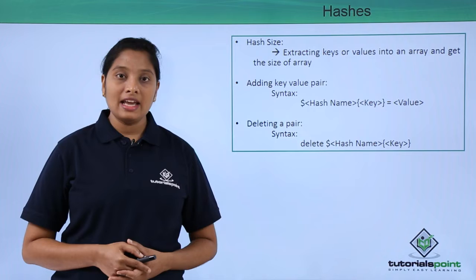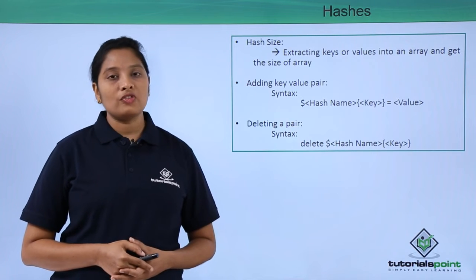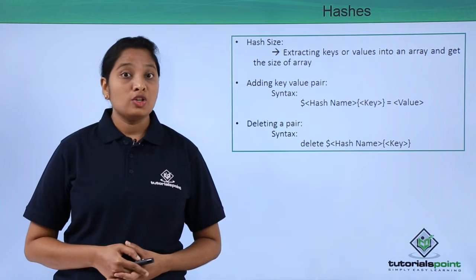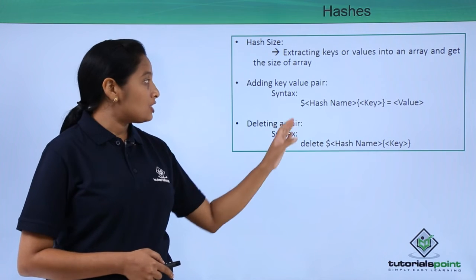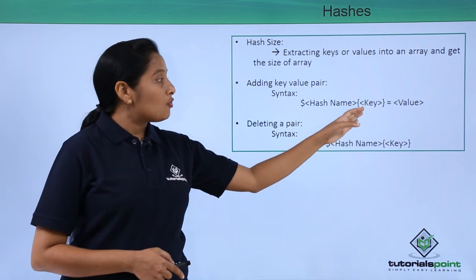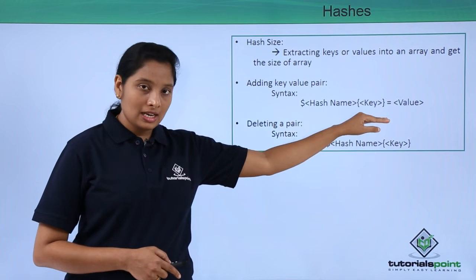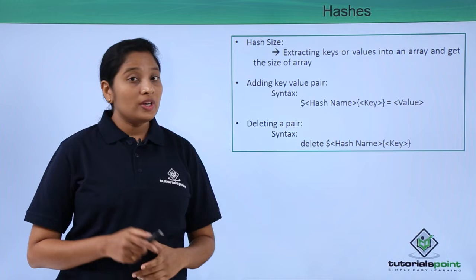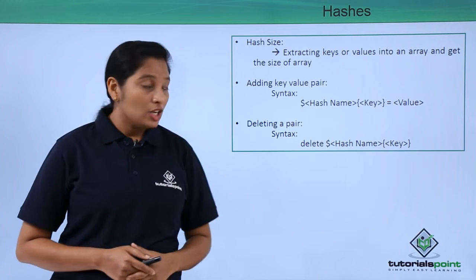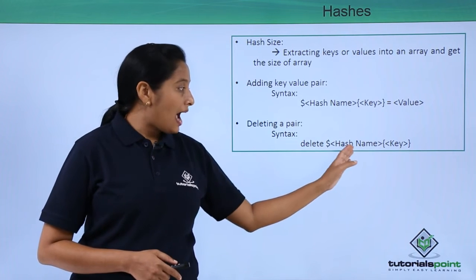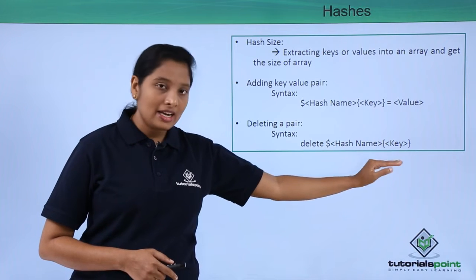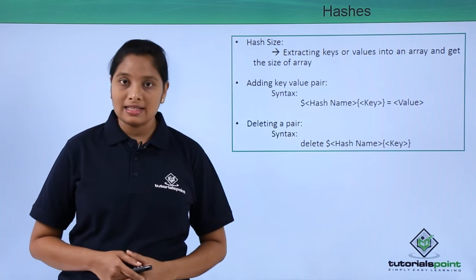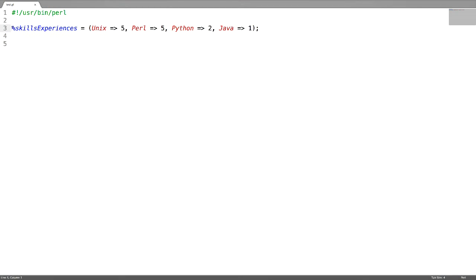To check the hash size, get the keys or values of the hash — this results in an array — then find the size of that array. To add a key-value pair, use dollar hash name followed by the key name enclosed in curly braces and assign the value. To delete a key-value pair, use the delete function followed by the hash name and key name enclosed in curly braces.